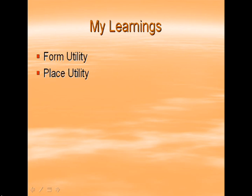Place utility is a utility created by changing the place of a particular commodity. For example, bringing crops from farms to market or to the place of consumption is an example of the creation of place utility.